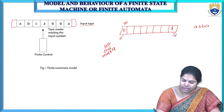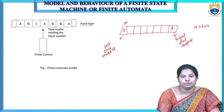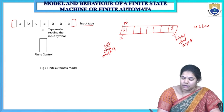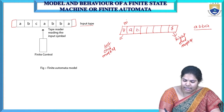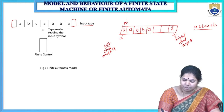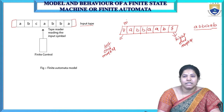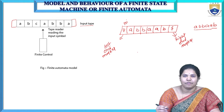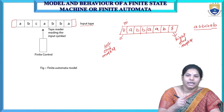Between the end markers, we place the string that we are going to read. Here the string that we are going to read is A, B, B, A — or for example A, B, A, B. This is the string I am going to read. The finite state machine will read the input symbols placed in the tape one by one.